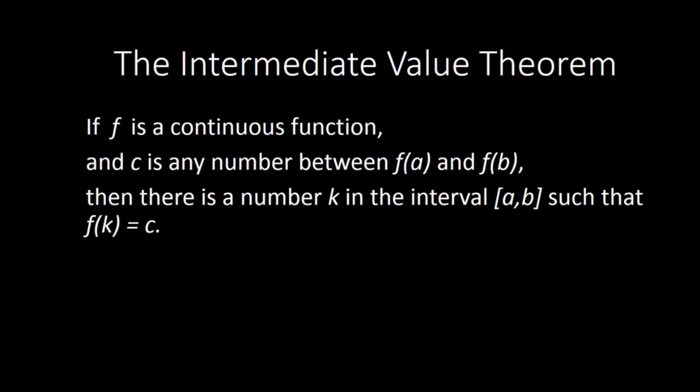This is the way you will see the Intermediate Value Theorem stated in a calculus book, because this idea has a lot of nice applications in calculus. We're going to create a slightly more specific version of this theorem that pertains more to the context of finding zeros of polynomial functions. The word "continuous" is a calculus term, and for our purposes, we can think of it meaning that the graph of the function doesn't have any holes, jumps, or gaps in it. Polynomial functions fit this category — polynomial functions are continuous.